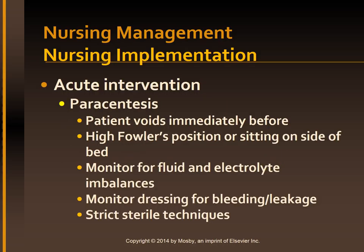Paracentesis: immediately before paracentesis, have the patient void to prevent puncture of the bladder. When a paracentesis is done, the patient sits on the side of the bed or is placed in high-Fowler's position. Following the procedure, monitor for hypovolemia and electrolyte imbalances, and check the dressing for bleeding and leakage. Maintain strict asepsis while draining or changing the peritoneal drain or dressing.